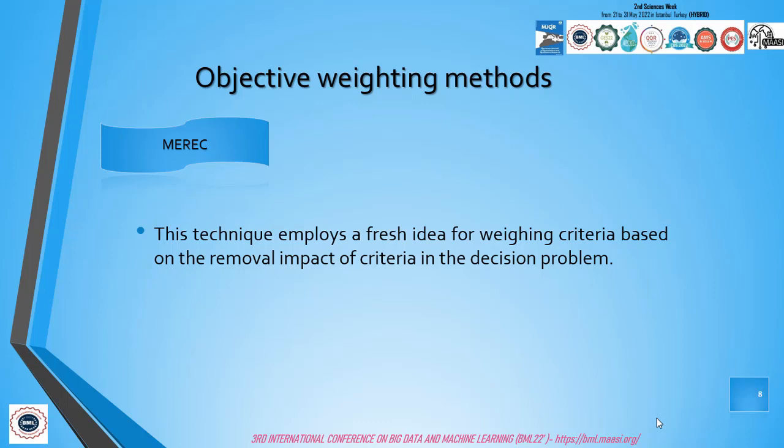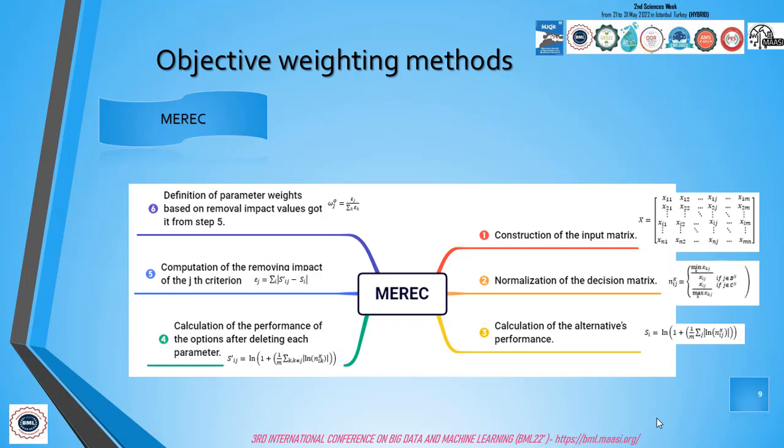The second technique is MEREC. It's also used to define the criterion's objective weights. This technique employs a fresh idea for weighting criteria based on the removal impact of criteria in the decision problem.